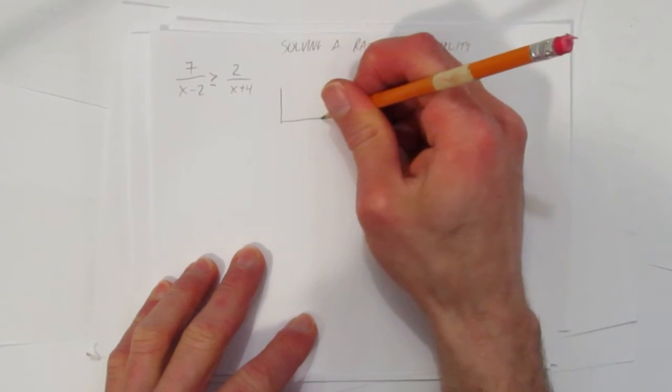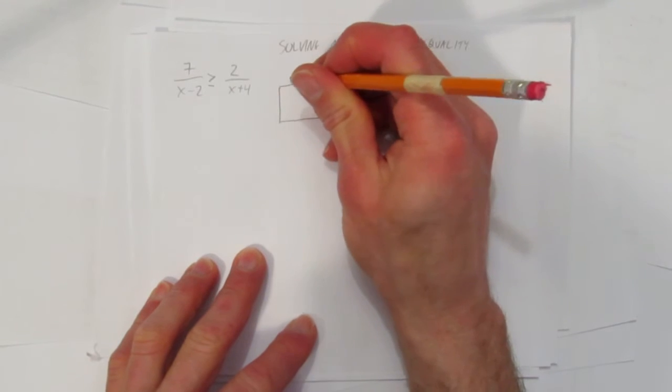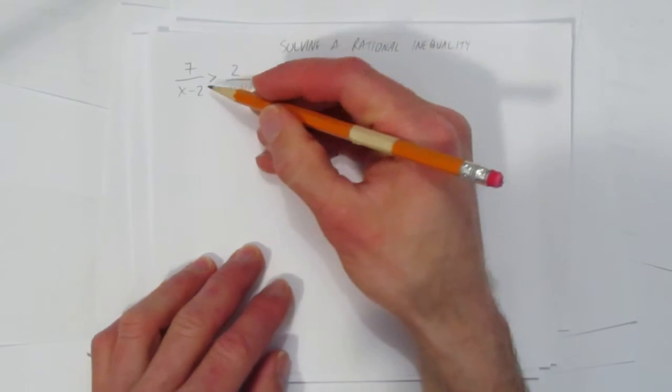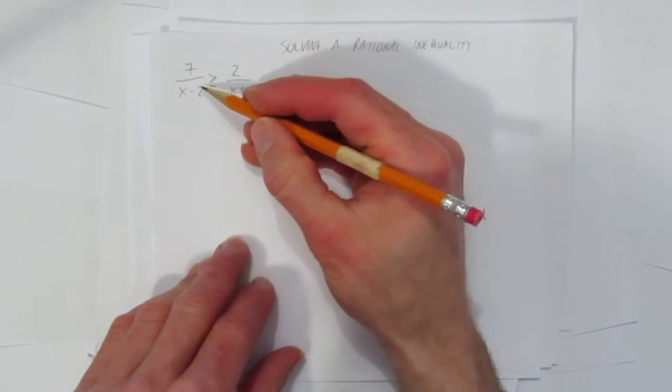So the first thing I want you to do is tell me the restrictions. Save them almost. What can x not be that would be bad? We have to keep them around.